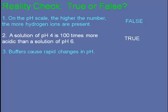Buffers cause rapid changes in pH. False. They do the reverse. They cause slow changes in pH.